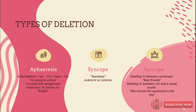The second type of apocope is deleting T between a consonant and a vowel. This happens when a word ending in T links into a word beginning with a vowel sound — the final T is often deleted. For instance, in the sentence 'She moved into an apartment in the city', the word 'apartment' is pronounced as 'apar'ment', with the final T not pronounced.